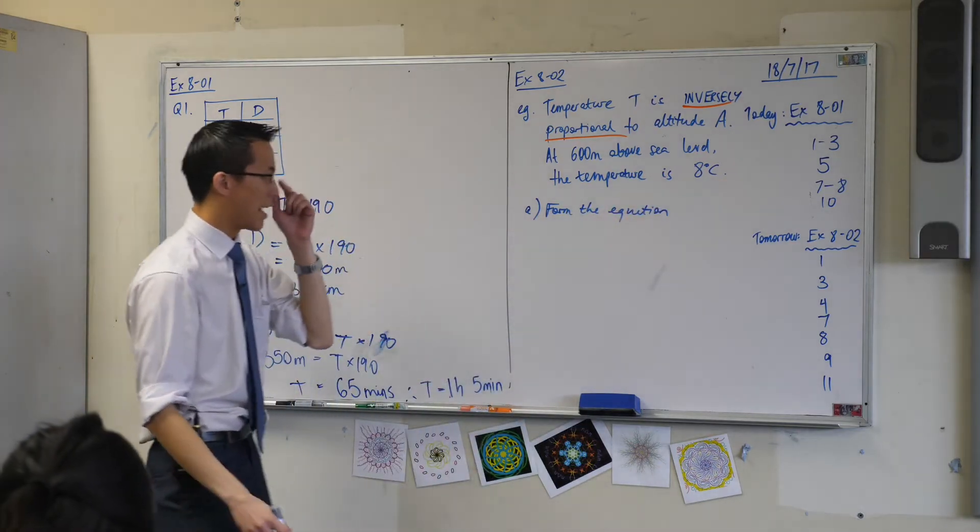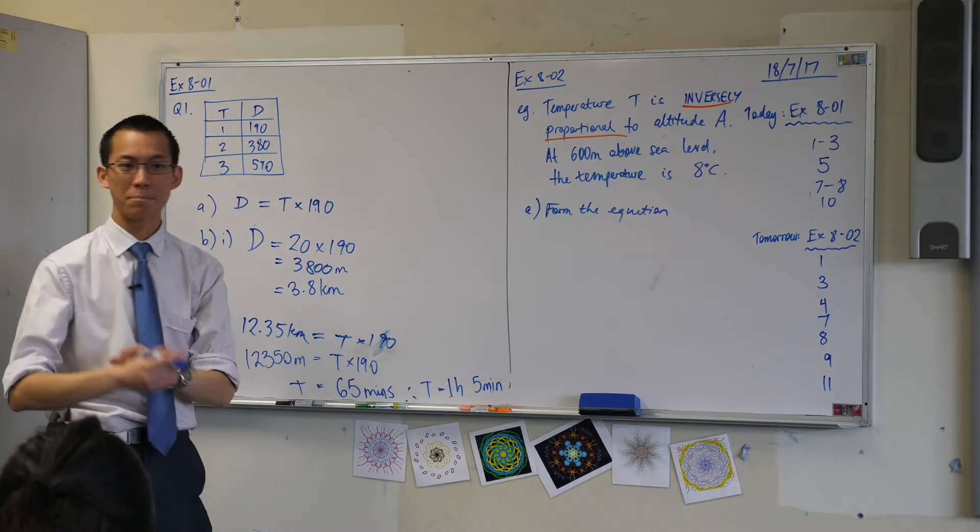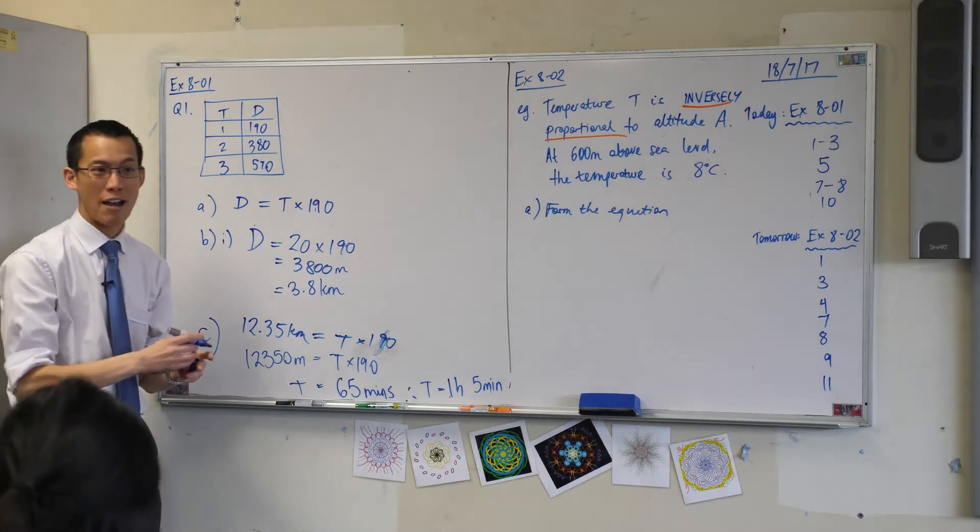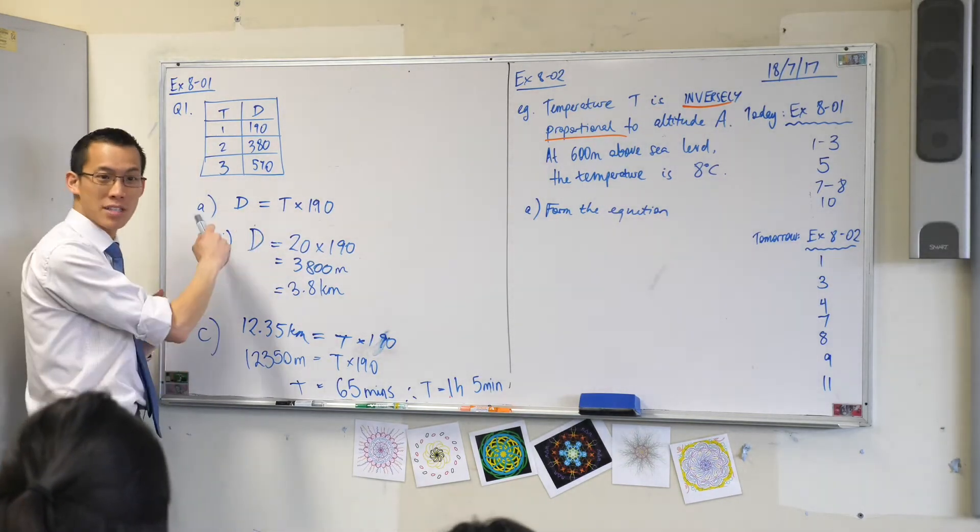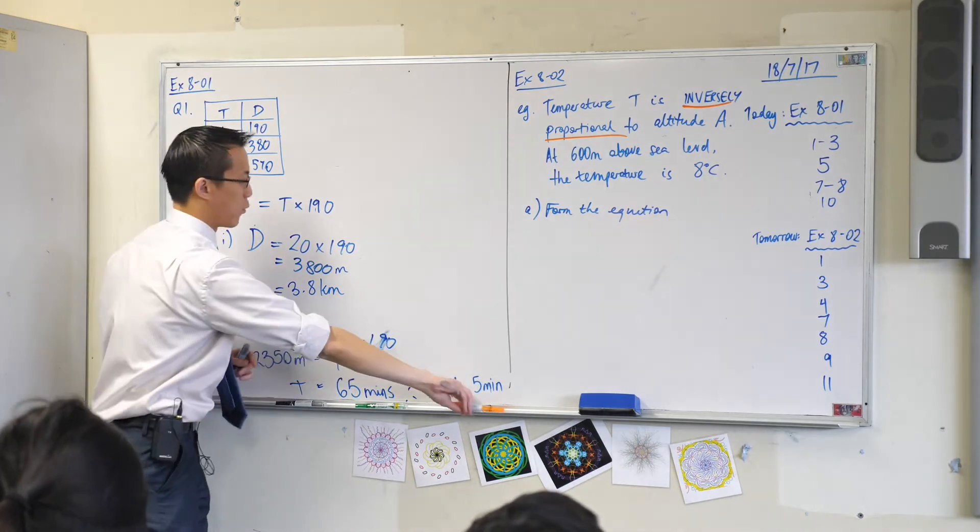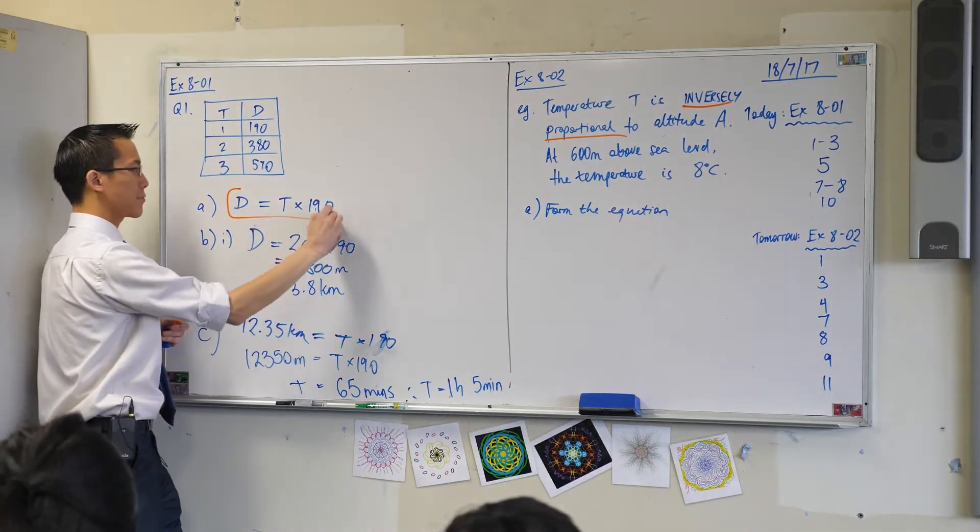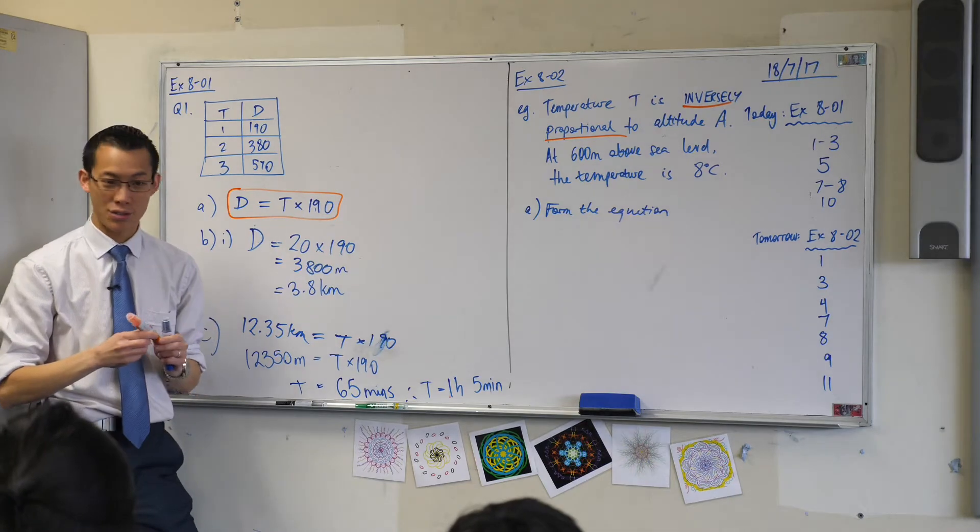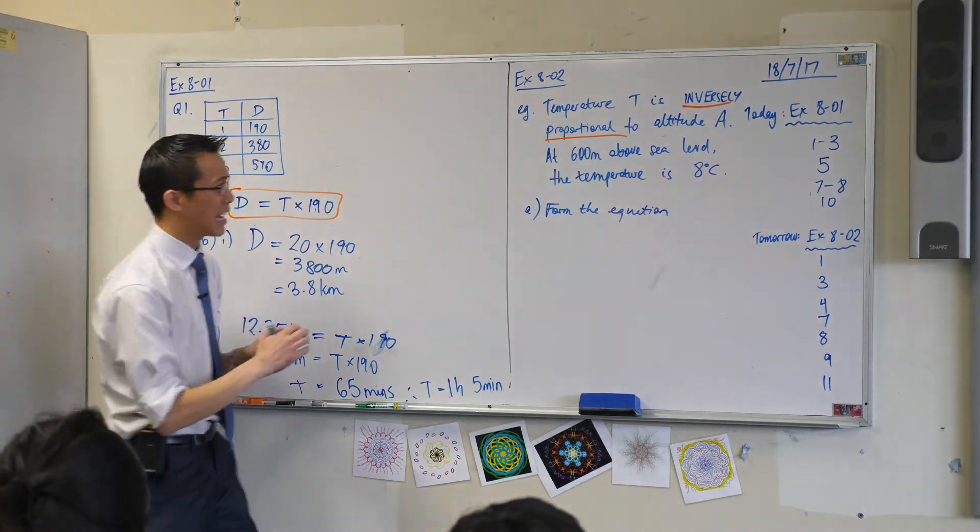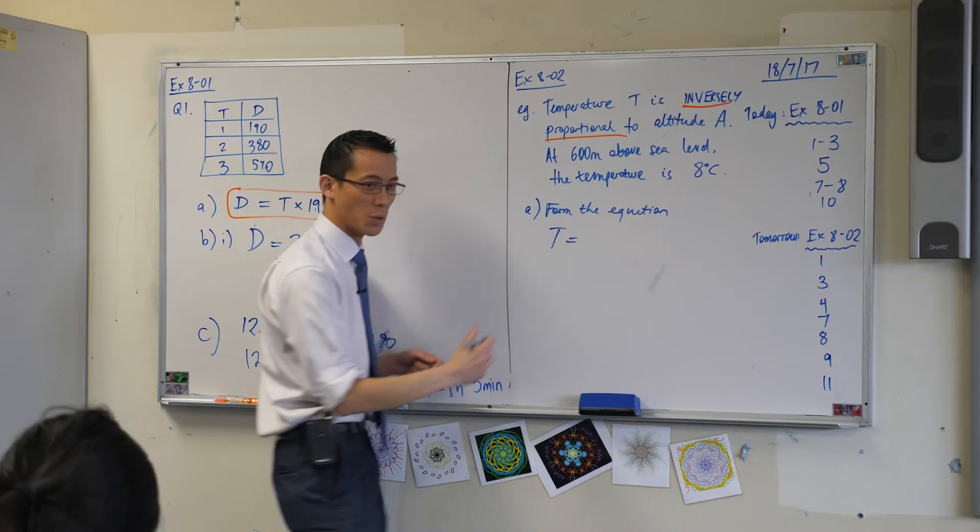So let's begin just by forming the equation first. So I guess we'll call this part A: form the equation. Okay, now, excuse me. You remember before, right, we formed an equation for the variation between distance and time when one got bigger, the other one got bigger too.